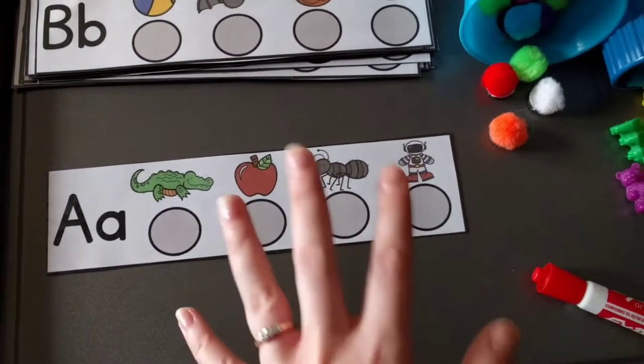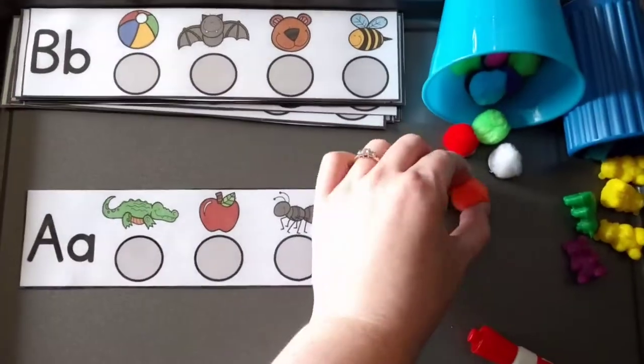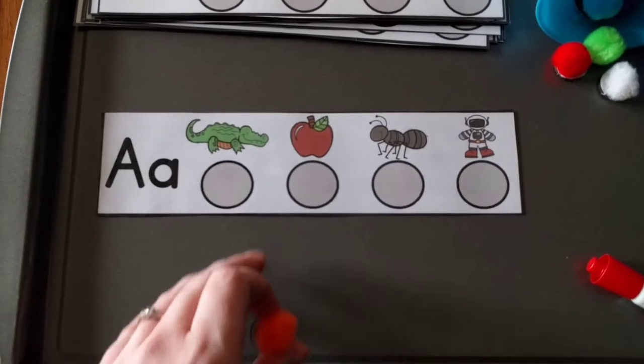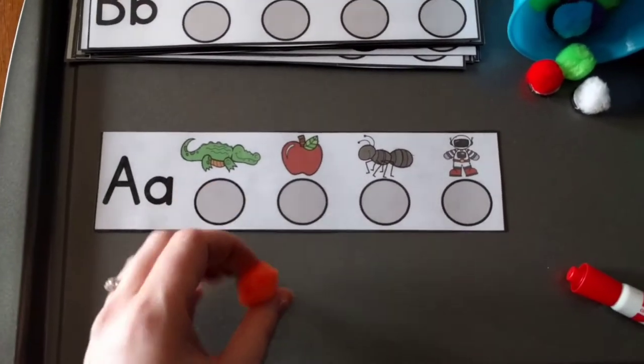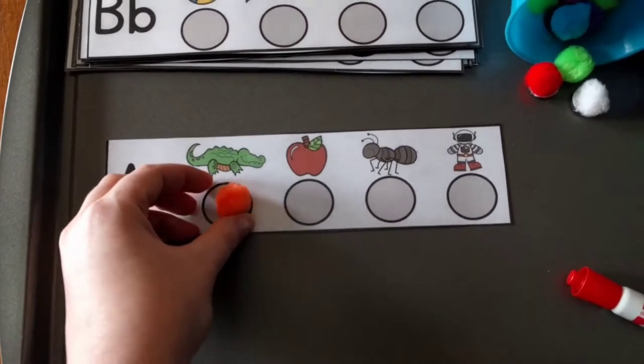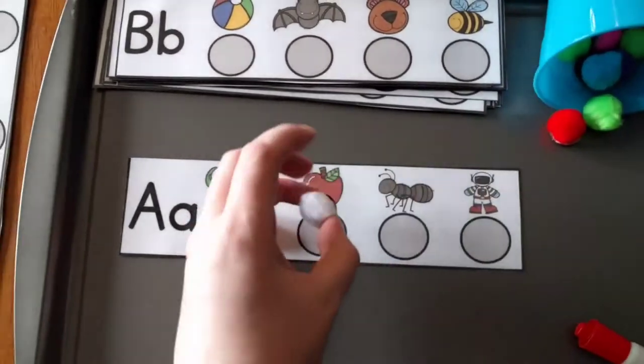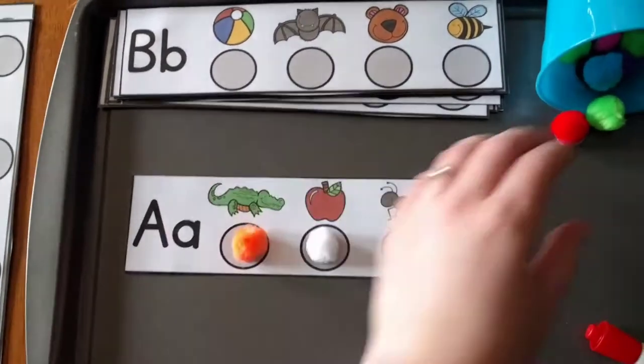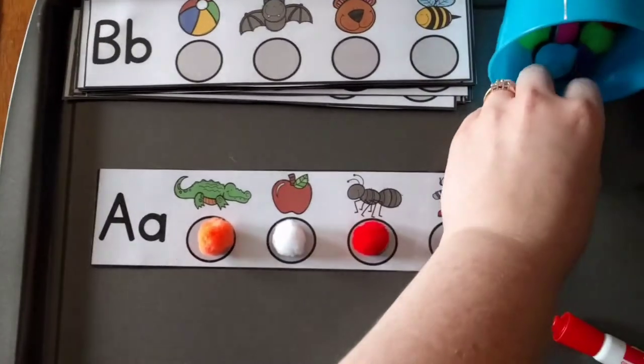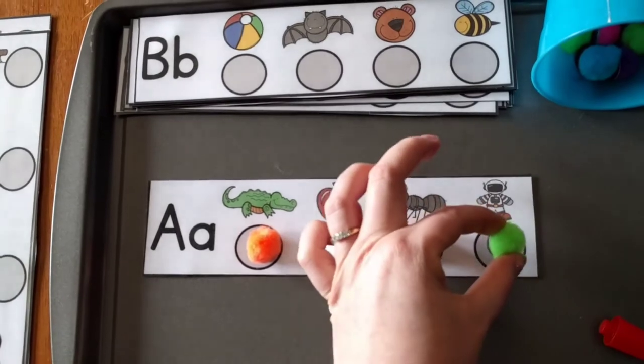Or you can use little objects. These are little pom-poms with magnets. I love using them on the trays like this because they stick really good and they're perfect to fit in these. So they would say, ah, ah, alligator, ah, ah, apple. They're just practicing the sound, ah, ah, ant, ah, ah, astronaut.